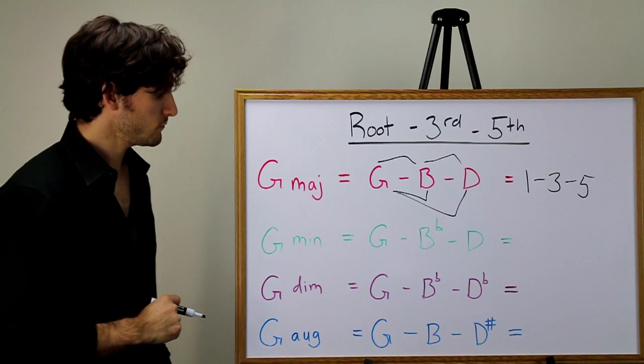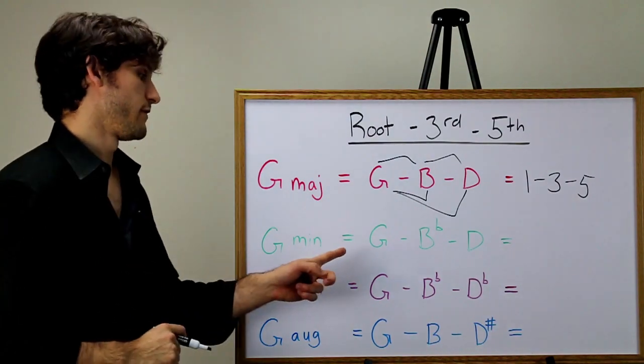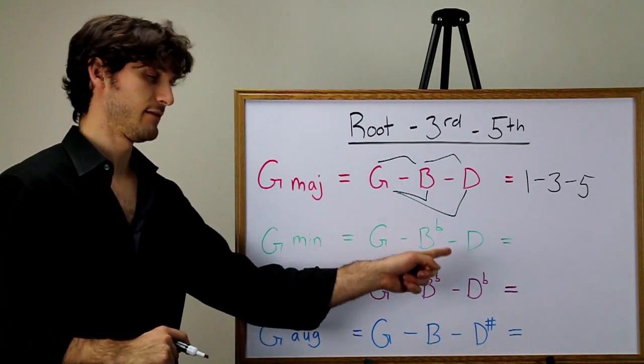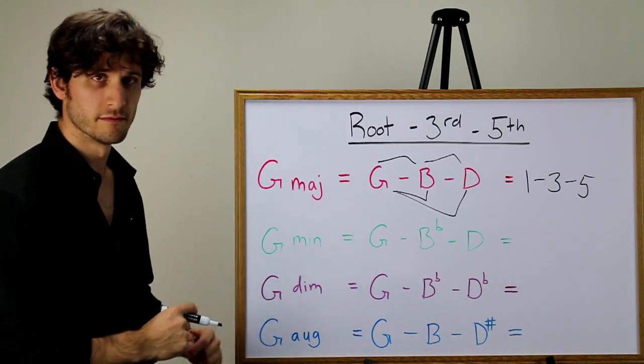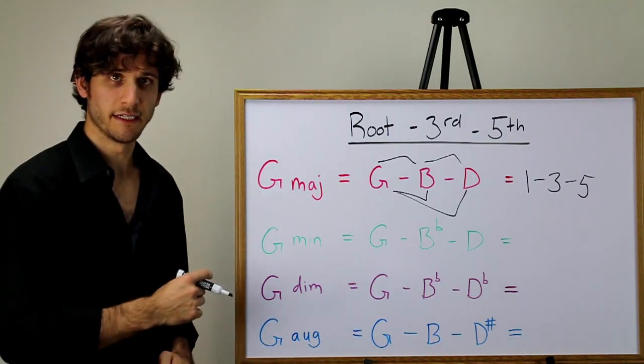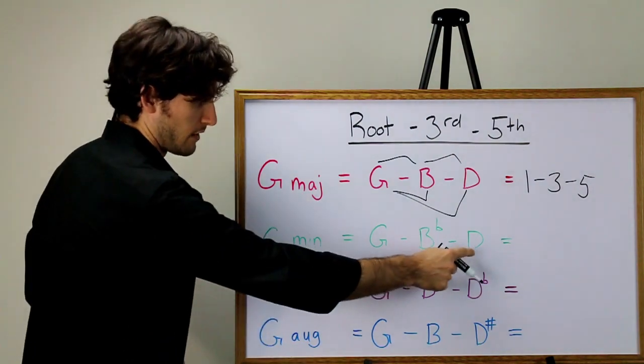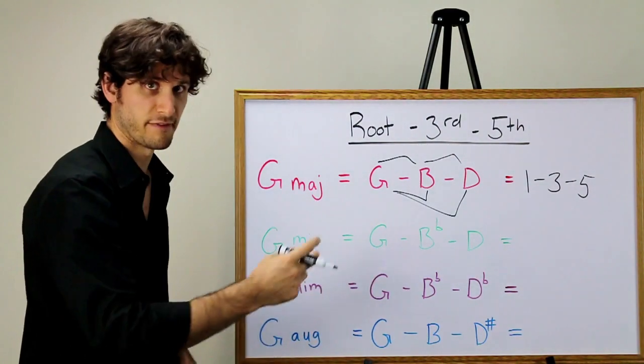Let's look at G minor. G minor has the notes G, B flat, and D. G is the root, so G is one. And D is still a perfect fifth away from G, so it's the five.